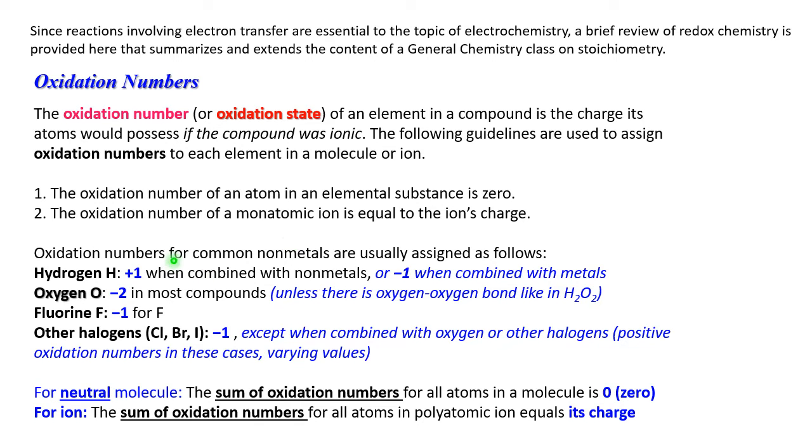For common nonmetals in covalent compounds, oxidation numbers are the following. Hydrogen: always +1. If it combines with ions with positive charge, it will be -1. So this rule is a sub-rule of number 2; smaller number dominates.